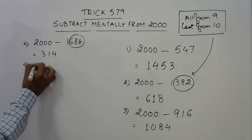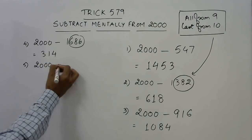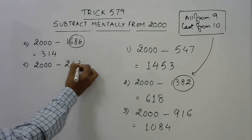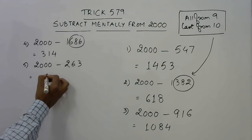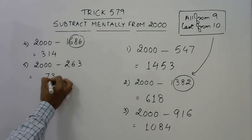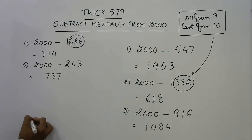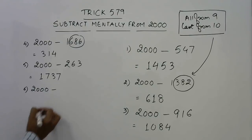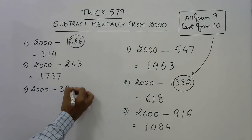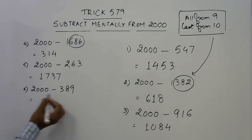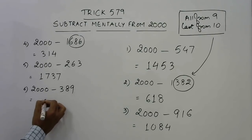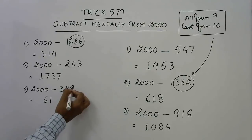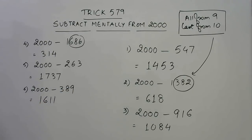Say we have to subtract 263 from 2000: 9 minus 2 is 7, 9 minus 6 is 3, 10 minus 3 is 7, and prefix a 1 because the answer has to be greater than 1000. So 1737 is the difference. Next, 2000 minus 389: 9 minus 3 is 6, 9 minus 8 is 1, 10 minus 9 is 1, and prefix a 1. So 1611 is the answer.